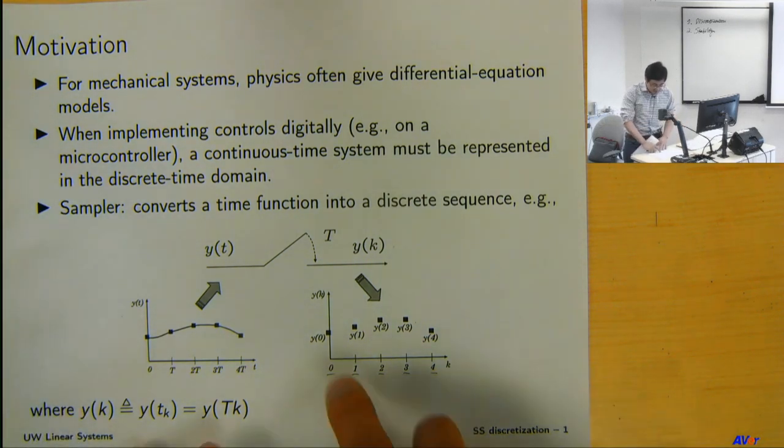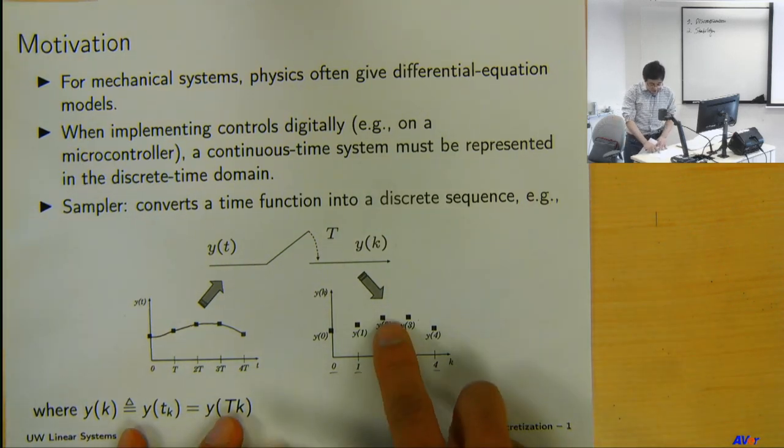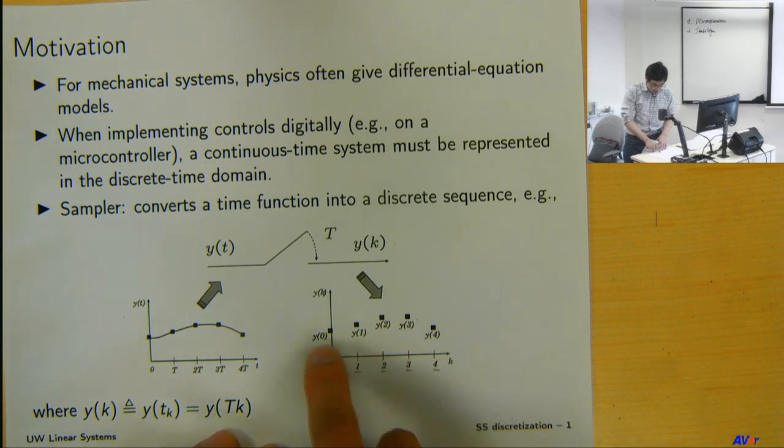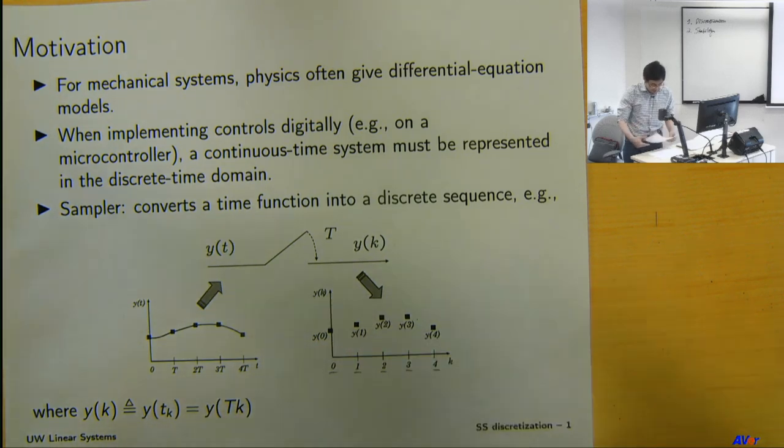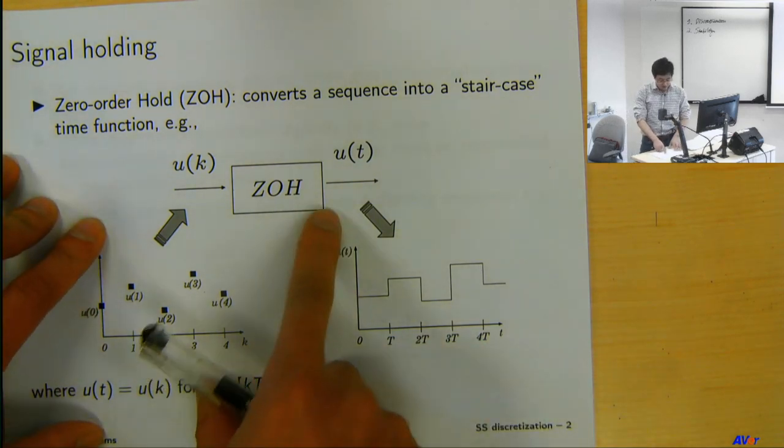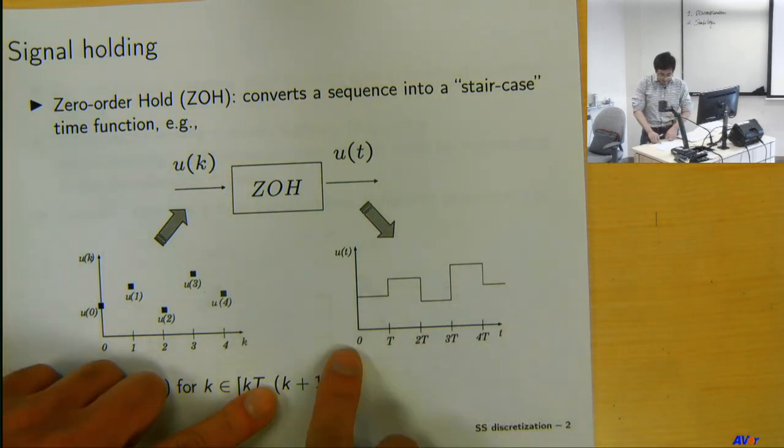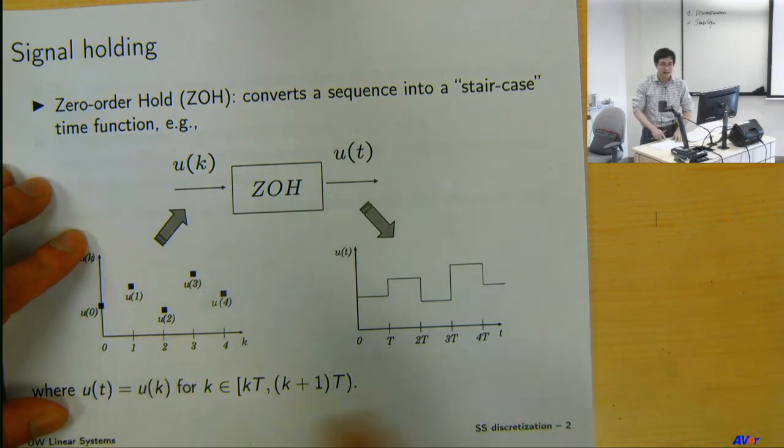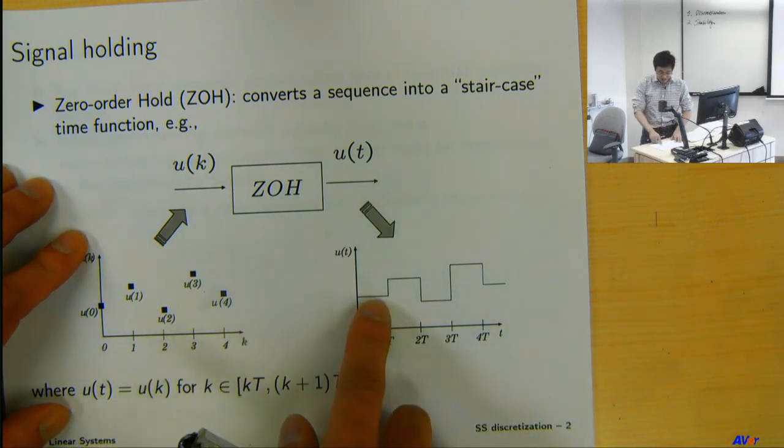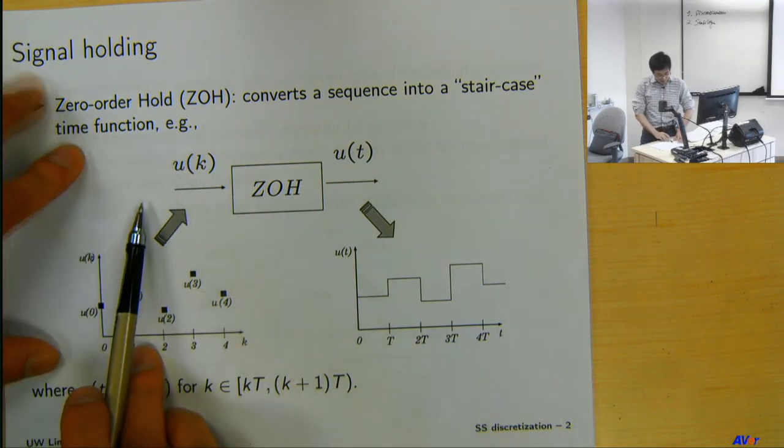Now, this is only a discrete time sequence. In practice, when you generate a controller, you have these discrete time control commands. Then what you do for feeding into the actual system, let's say you have a mass, you apply force to it, you have to apply force consistently throughout the time. You cannot just do impulses to a force, to a mass.